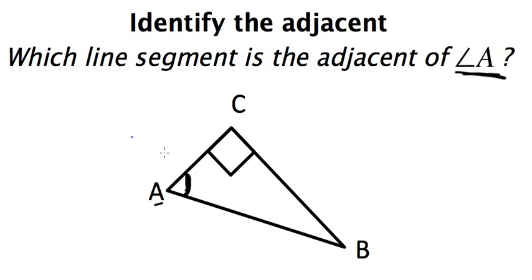And I can see that angle A is actually made up of two line segments. This one here in blue and this one here in blue. And both are actually adjacent to A.